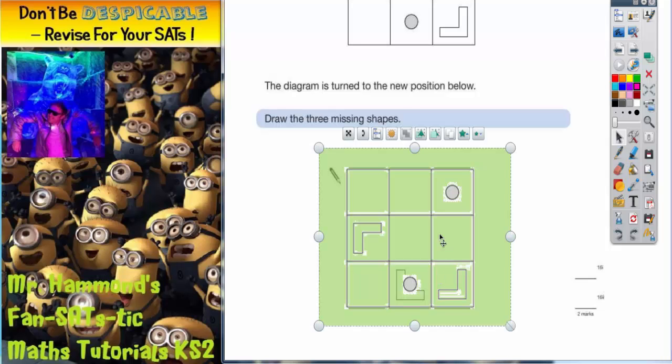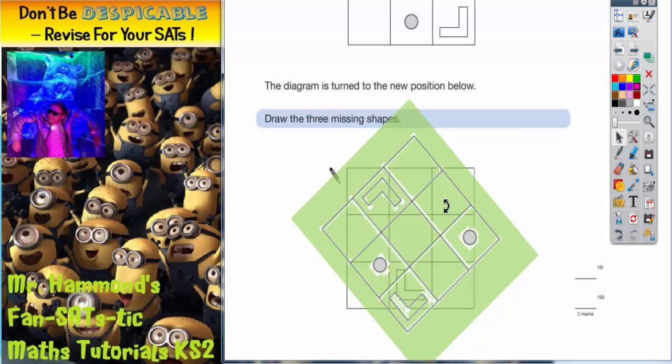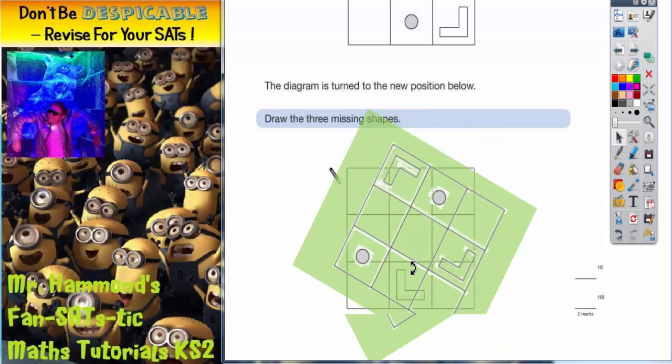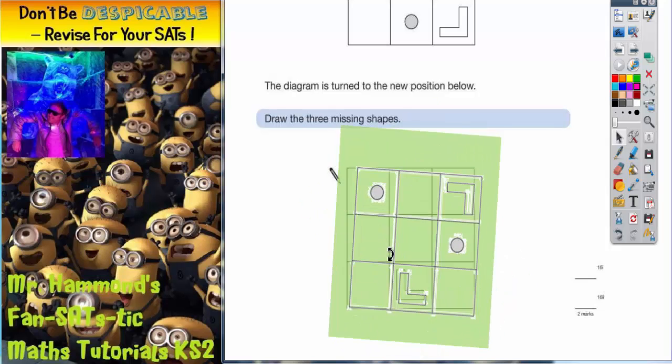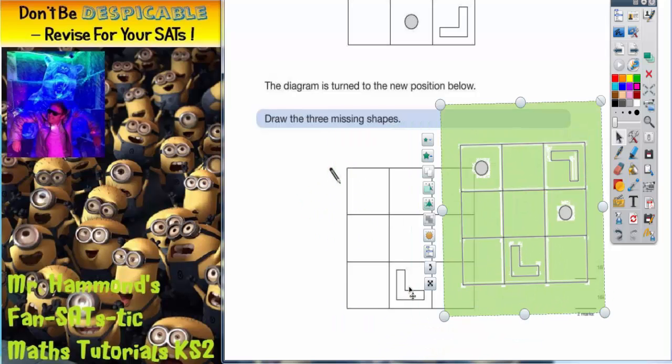And then what I need to do is rotate it. So if I rotate it until I get this L shape down here in the bottom middle square.